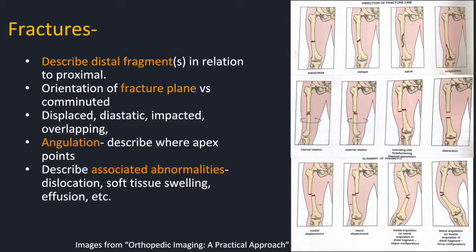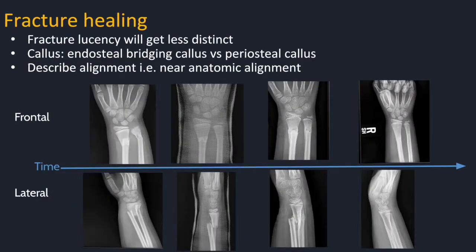Fracture descriptions will be a common part of your first MSK rotation. The goal is to describe the distal fragment in relation to the proximal fragment, describe the fracture plane, and describe where it is in space. Describe the angulation as we discussed. Finally, describe associated abnormalities.